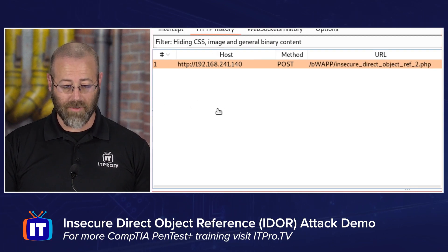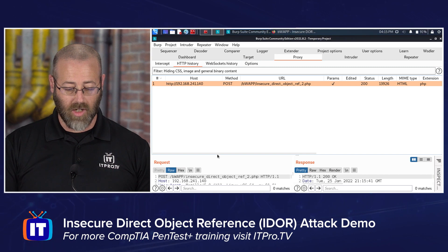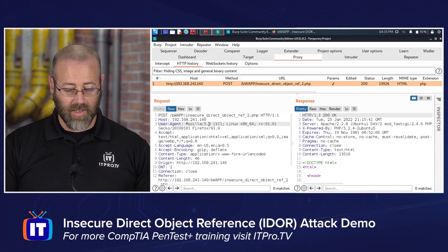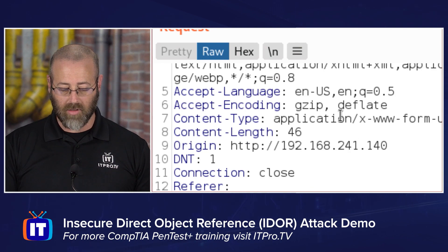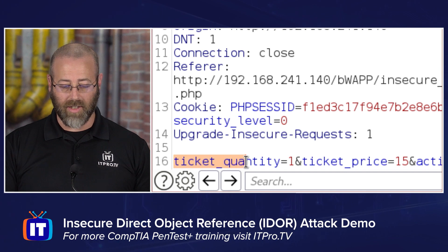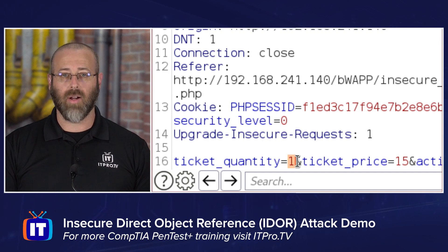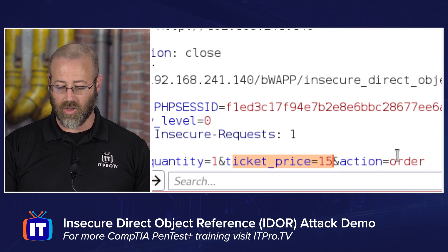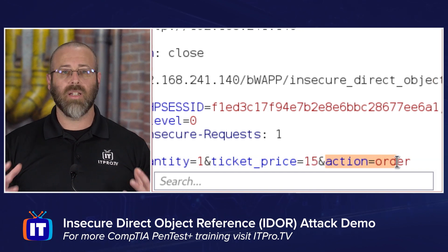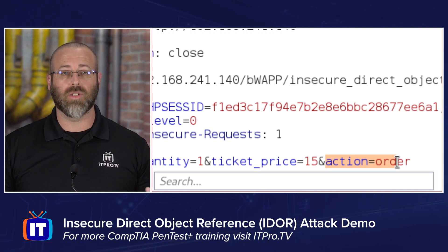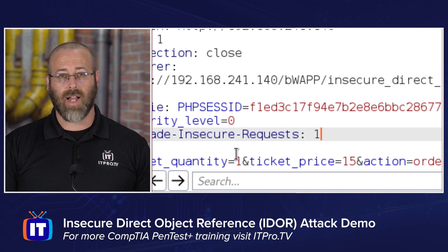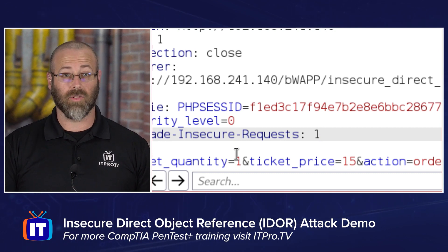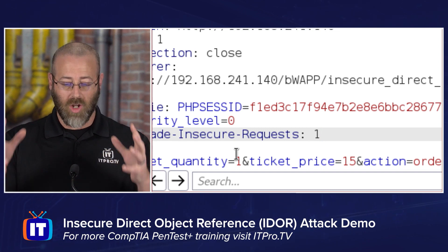But that's not all — there's more. Let's look at the actual request down here, which we can then modify. You can see in this body that there's all sorts of things going on, like the host and the user agent used to make this request. And if I scroll down, I can see the data that went along with this request: ticket quantity equals one — well, that's right, I ordered one ticket — and then the ticket price, which is 15 euros, and then the action taken, which is order. So it's basically building a query to the web application to say this is what I want to do, and these are the parameters I want them to occur in. Hopefully you're seeing the problem here.